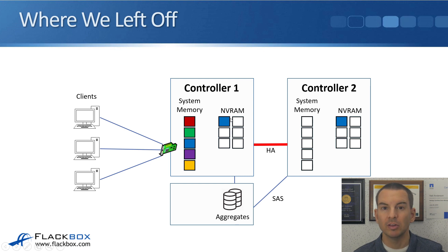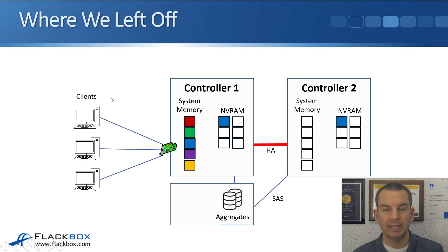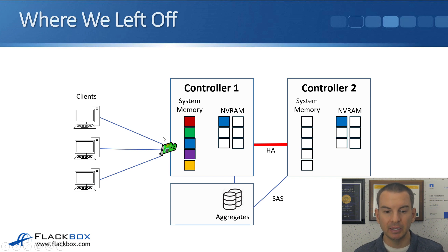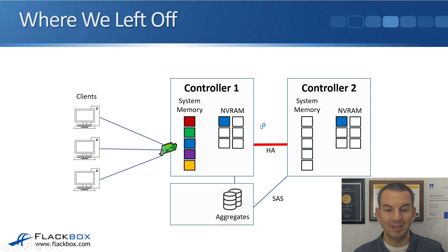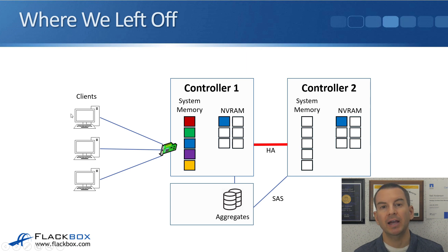In the diagram, we've got Aggregate 1, which is owned by Controller 1, and Controller 1's HA partner is Controller 2. Whenever a write comes in for Aggregate 1 on Controller 1, that write request is written into system memory on Controller 1 and into NVRAM on both Controller 1 and Controller 2. As soon as the data has been written into system memory and NVRAM on both controllers, an acknowledgement is sent back to the client — before it's written to disk. It's much faster to write to memory than to disk, so this improves performance.